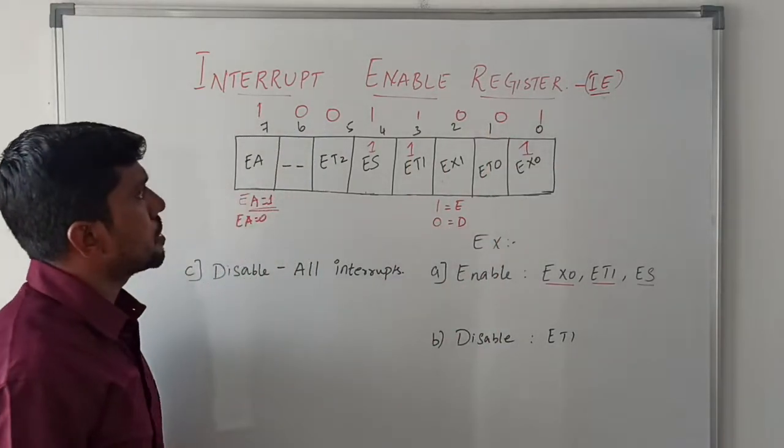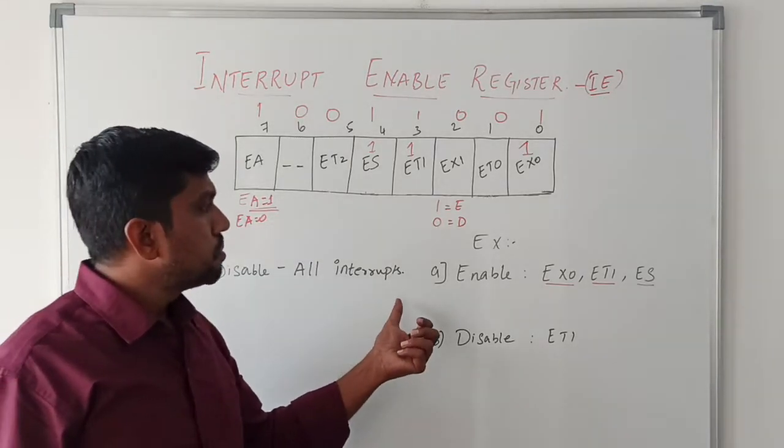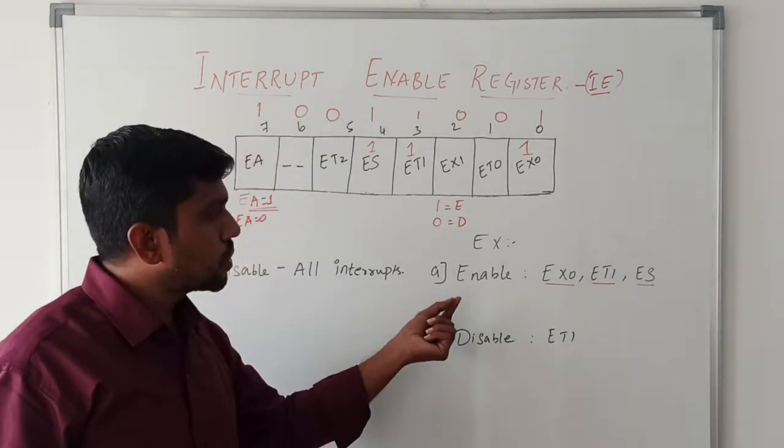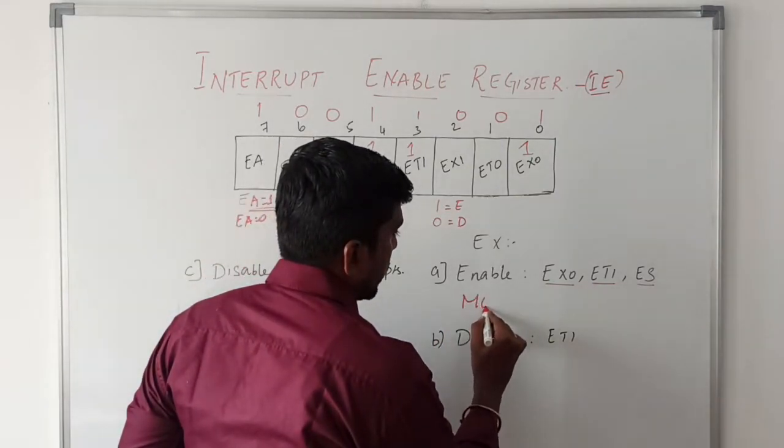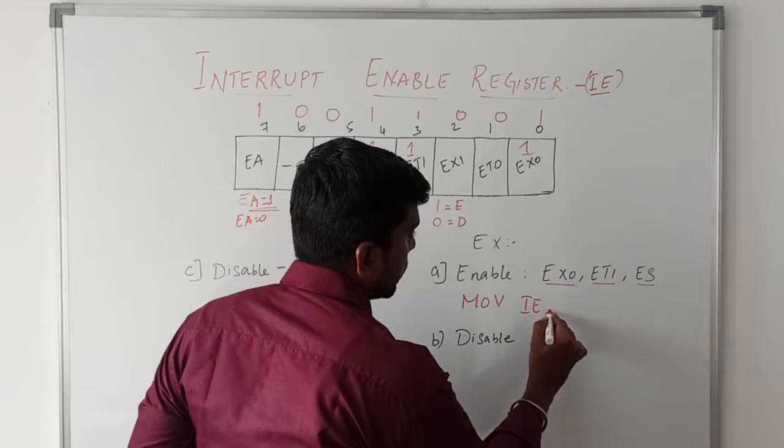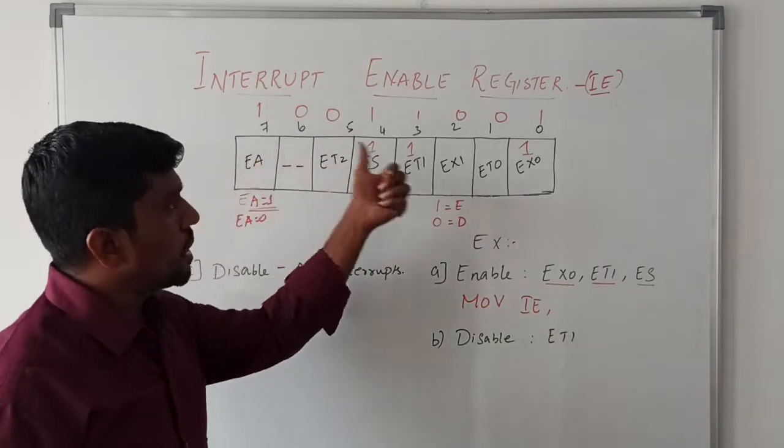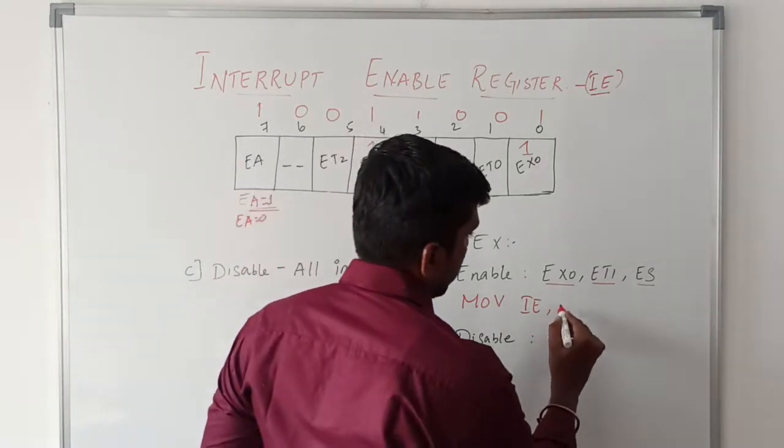This is the 8-bit value. Now we frame the instruction to enable these three interrupts. The instruction is MOV IE, then write this 8-bit number in immediate values.